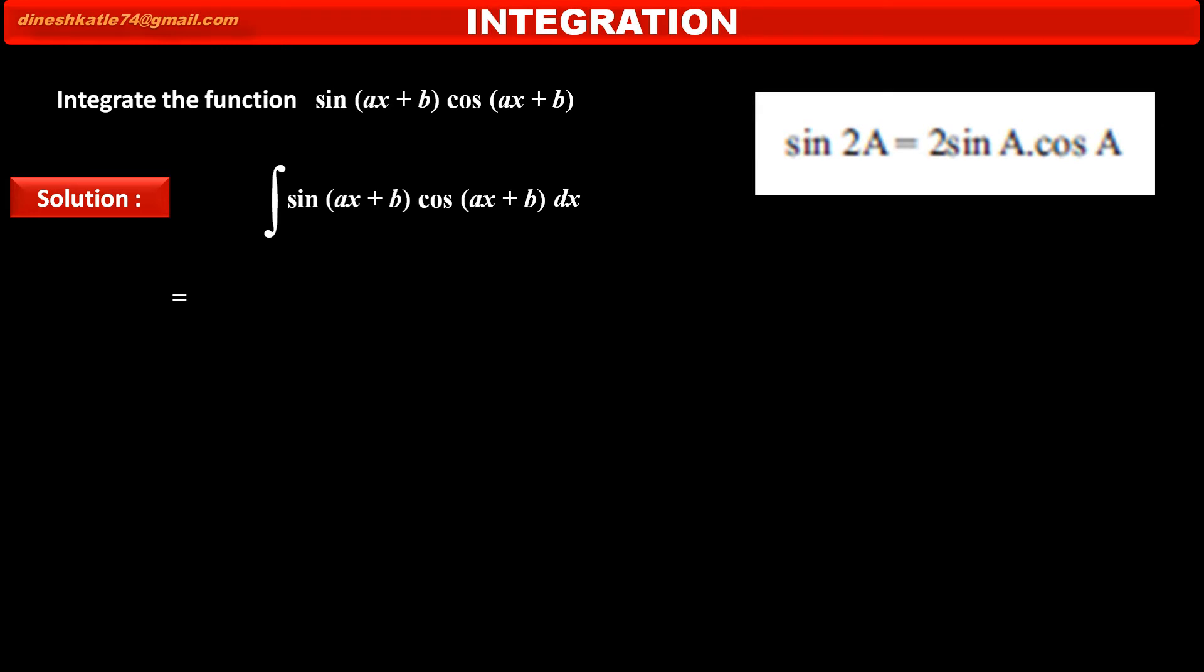To apply this formula in the given function, we have to multiply and divide the function by 2. So, 1 upon 2, in integration, 2 into sin(ax+b) into cos(ax+b).